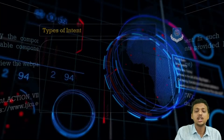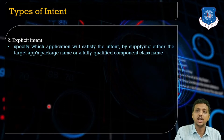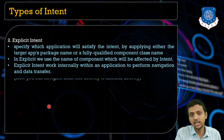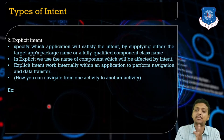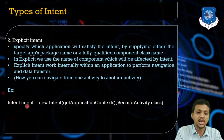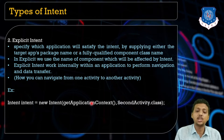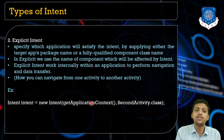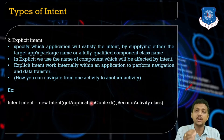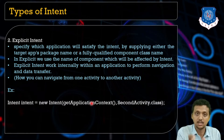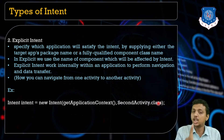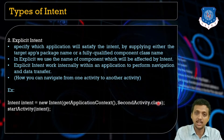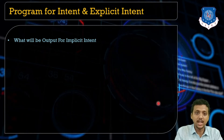For explicit intent, you specify which component you want to use. Explicit intent works internally within the application for navigation or data transfer. To navigate from one activity to another, create an intent object like: Intent intent = new Intent(getApplicationContext(), SecondActivity.class). Remember to use .class — not .java.